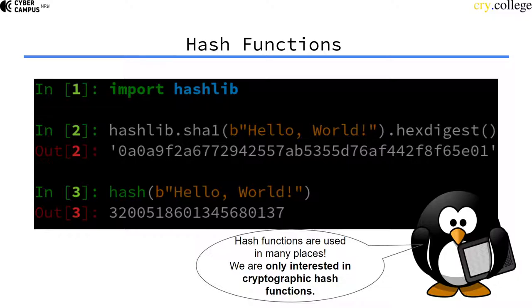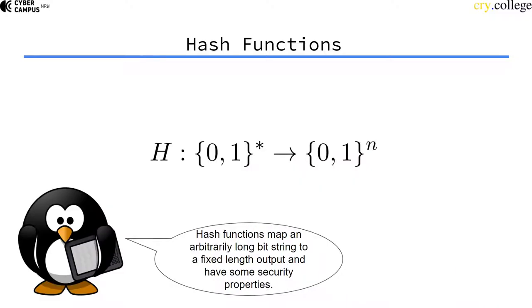You can also use the hash function built into Python, which returns a number. Hash functions are used in a lot of places, but we're only interested in cryptographic hash functions. The built-in hash function in Python is not a cryptographic hash — it's used for something completely different. Cryptographic hash functions take an arbitrarily long string and map it onto a fixed output length string, with some security properties that we'll look into now.